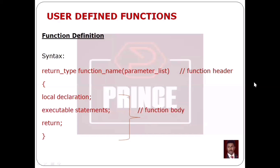Then the function block is opened and closed with curly braces — this is the function body. The function body contains local declarations and executable statements, then the return statement. The return statement specifies what type of data is written, which is the return type.